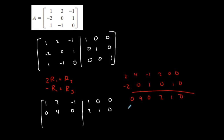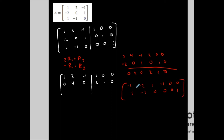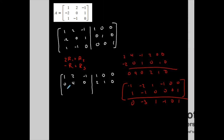For row three: the opposite of row one is negative 1, negative 2, 1 | negative 1, 0, 0. Plus row three which is 1, negative 1, 0 | 0, 0, 1. Adding them together: 0, negative 3, 1 | negative 1, 0, 1. So the new row three is 0, negative 3, 1 | negative 1, 0, 1.